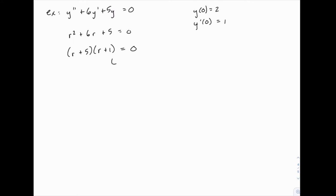So we know we have two distinct real answers for r: negative 5 and negative 1, which means that y will be c1 e to the negative 5t plus c2 e to the negative 1t.